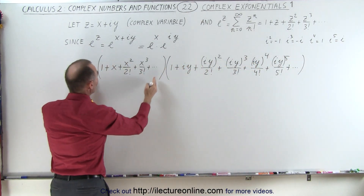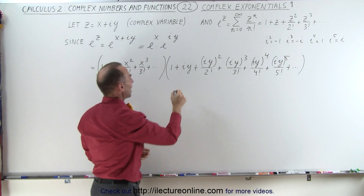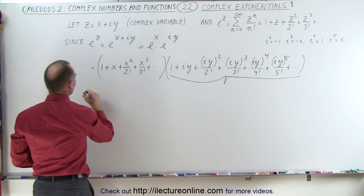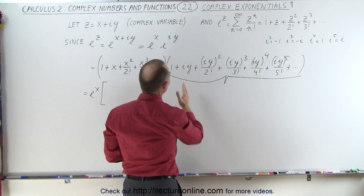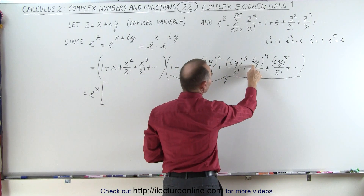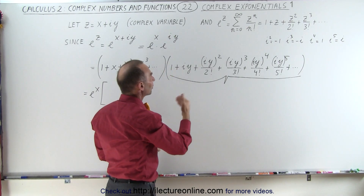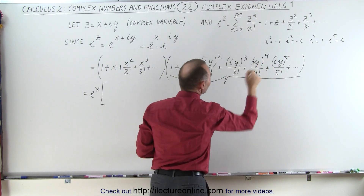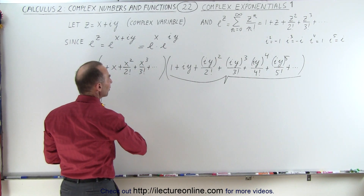The e to the x part is simply e to the x. Now we expand the e to the iy part, and we write e to the x separately. Realizing that every other term is going to be a real number — because i squared is negative 1, i to the 4th is 1, i to the 6th is negative 1 — and every other term is going to be imaginary, because we have i to the 1st, i to the 3rd, i to the 5th, and so forth. So we're going to separate the real numbers from the imaginary numbers.